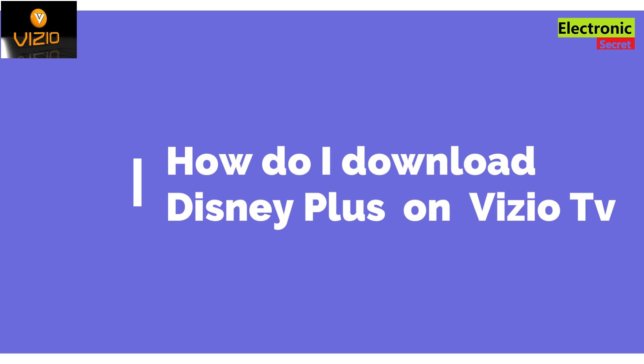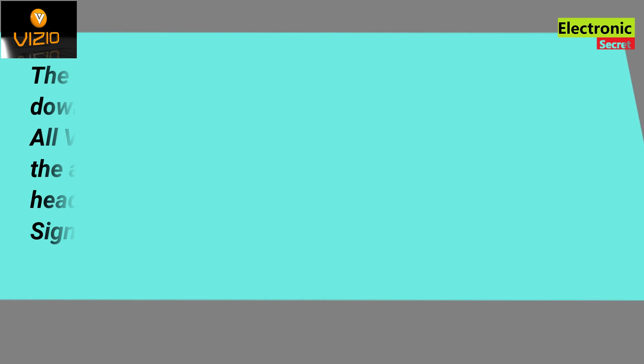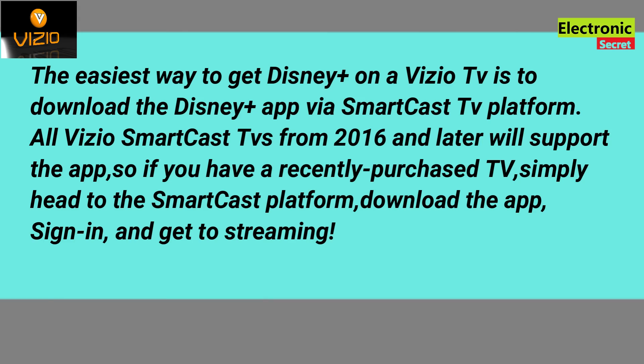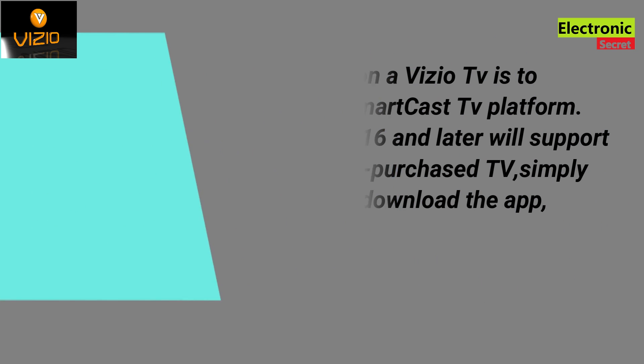How do I download Disney Plus on Vizio TV? The easiest way to get Disney Plus on a Vizio TV is to download the Disney Plus app via SmartCast TV platform. All Vizio SmartCast TVs from 2016 and later will support the app. So if you have a recently purchased TV, simply head to the SmartCast platform, download the app, sign in, and get streaming.